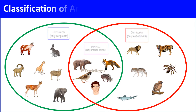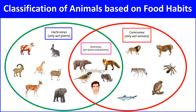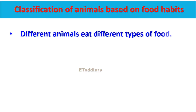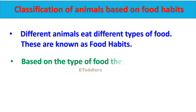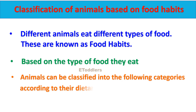Classification of animals based on food habits. Like human beings, animals also need food to grow and stay active. Different animals eat different types of food. These are known as food habits. Based on the type of food they eat, animals can be classified into the following categories according to their dietary habits.